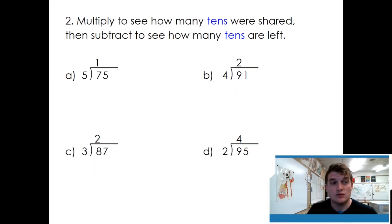Multiply to see how many tens were shared. Then subtract to see how many tens are left over. One times five is five. Then we need to subtract seven minus five equals two. There's two tens left over. Try the next three.